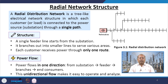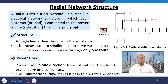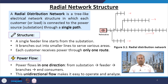A radial distribution network is a tree-like electrical network structure in which each customer or load is connected to the power source substation through a single path — there is no closed path. A single feeder line starts from the substation and branches out into smaller lines to serve various areas, and each customer receives power through only one route. Power flows in one direction from substation to feeder to branches and end consumers — this is known as unidirectional flow of current — and it is quite easy to operate and analyze.